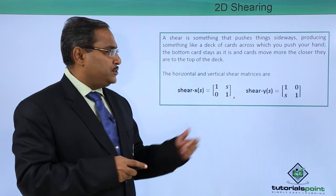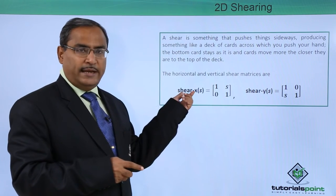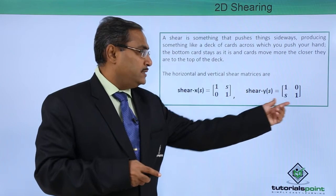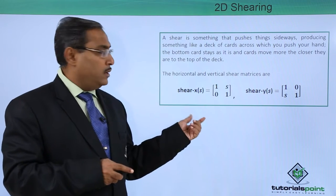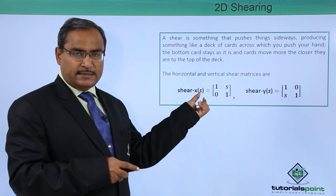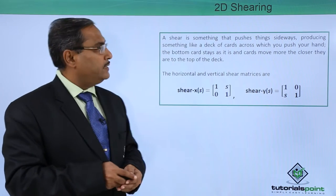The horizontal and vertical shear matrices will be something like this. That is shear_x(s) and here shear_y(s). This is the respective matrix we are going to have. Whenever we are having this shear along the x-axis and s is the respective factor of shearing, this is the matrix and for the y this is the matrix.